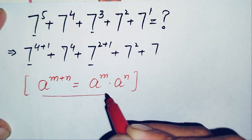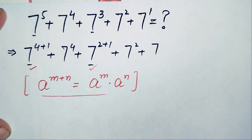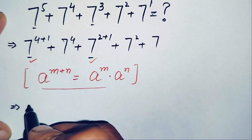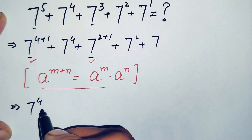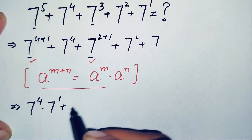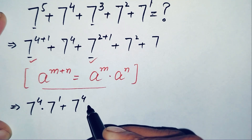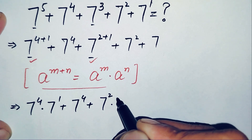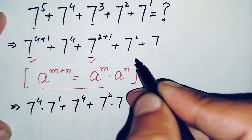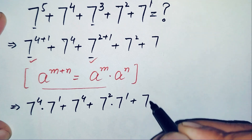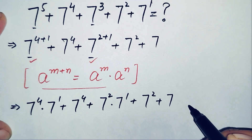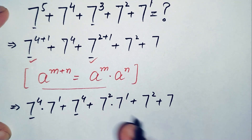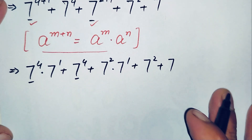Applying this exponential property, the equation becomes: seven raised to power four times seven raised to power one, plus seven raised to power four, plus seven raised to power two times seven raised to power one, plus seven raised to power two, plus seven.